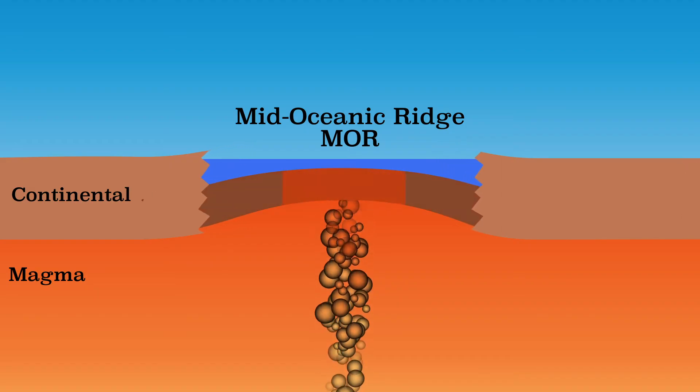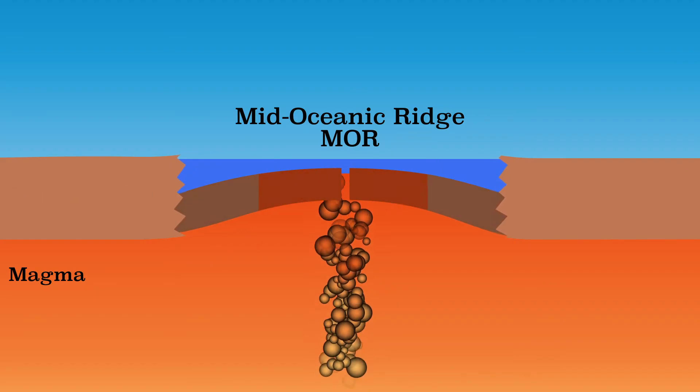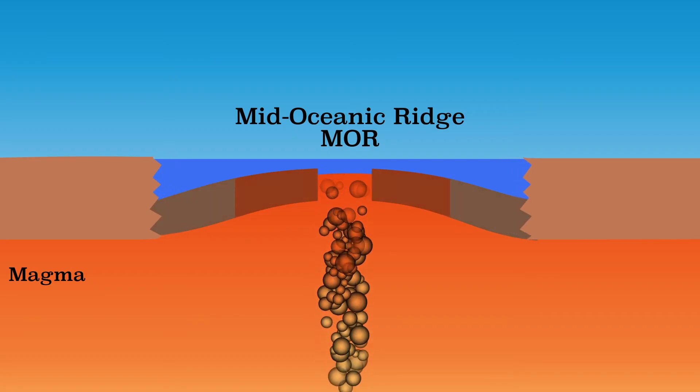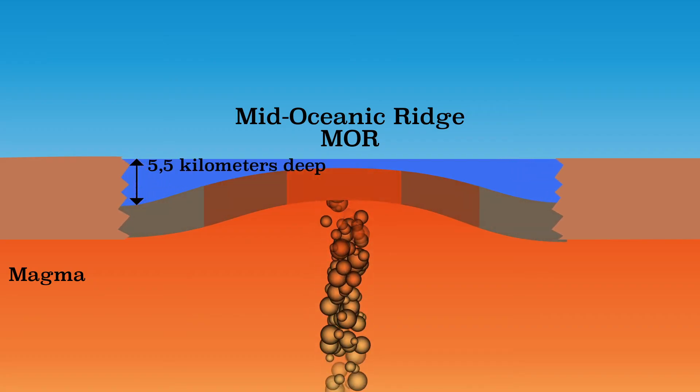The crust grows older, becomes cooler, which increases the density. This causes the crust to lie deeper, making the ocean 5.5 kilometers deep.